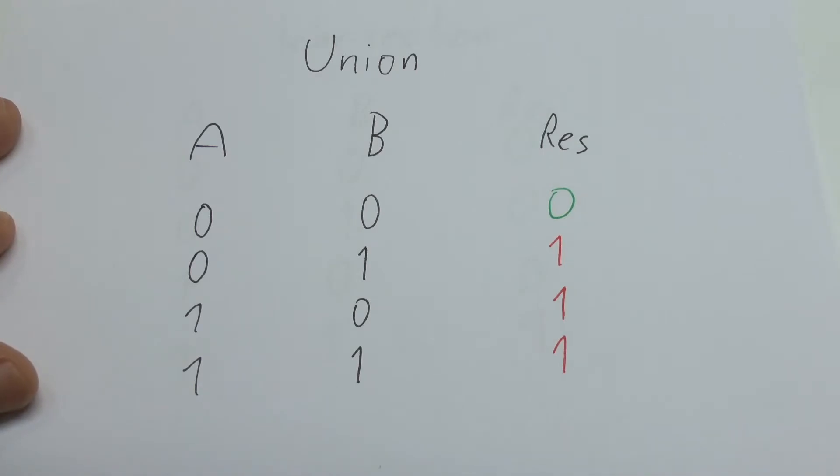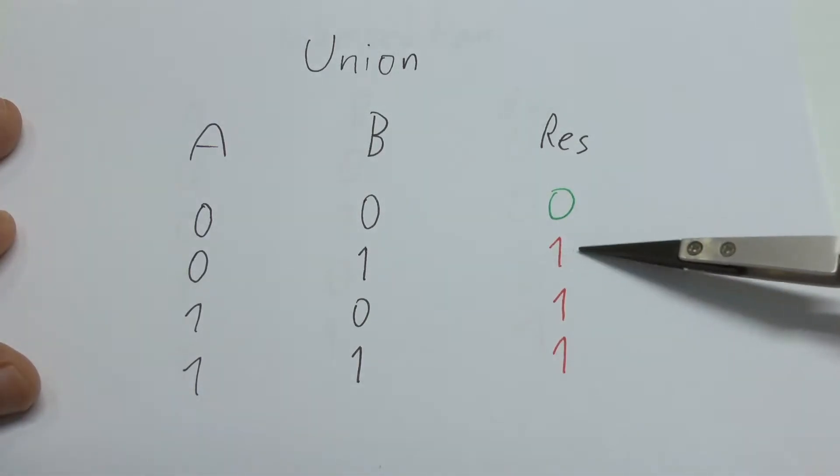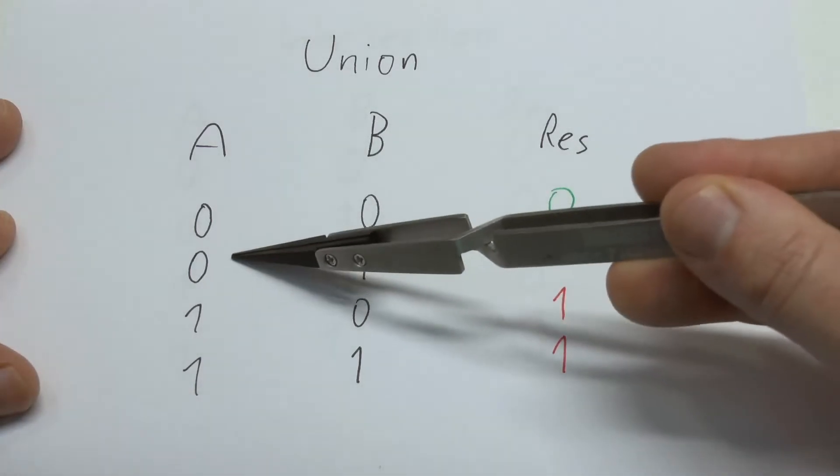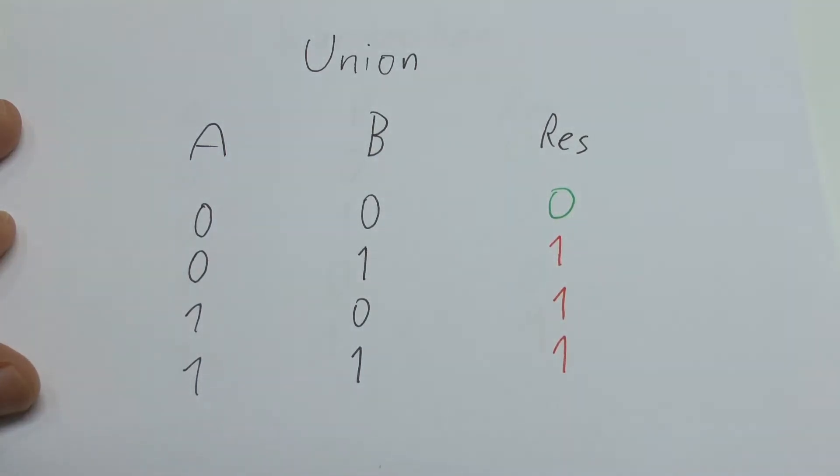Candidate number two is Union. Union gives us a 1 if the point is set either in A or in B, so we also obviously can't use that.